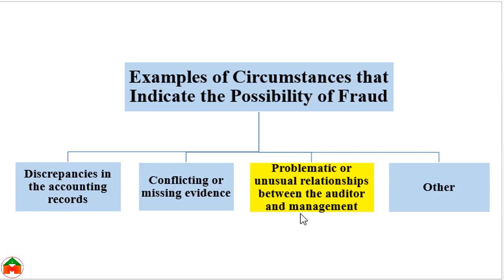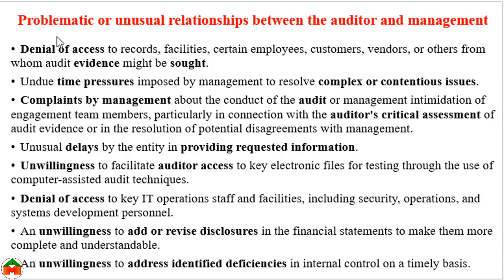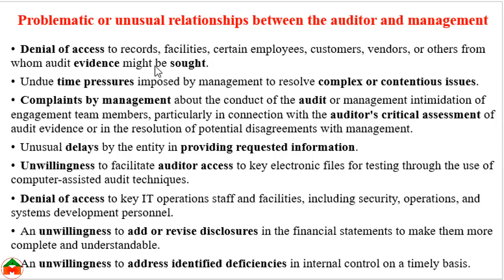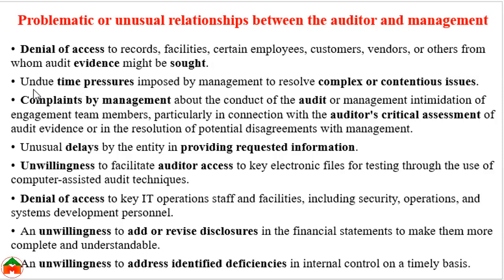Now we look at problematic or unusual relationships between the auditor and management that indicate the possibility of fraud. The first example is denial of access to records, facilities, or certain employees, customers, vendors, or other parties from whom audit evidence might be sought. If management does not provide access to that evidence, that circumstance indicates the possibility of fraud risk.